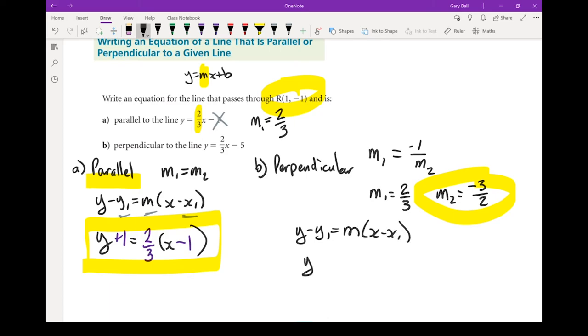That y stays the same. My y1 is going to be negative 1. So I take the opposite sign of that, which is plus 1 equals, instead of the m, I'm going to put in whatever my slope on my second line is, minus 3 over 2.